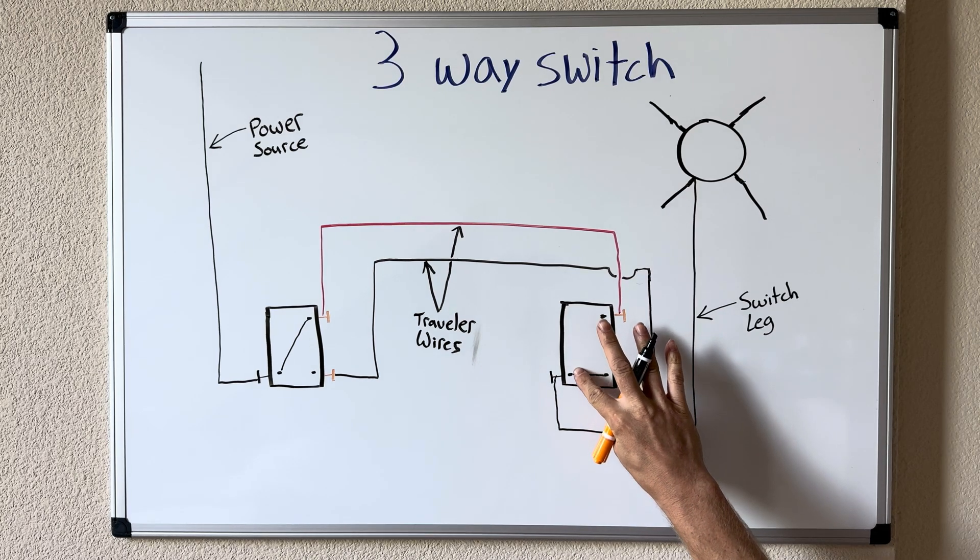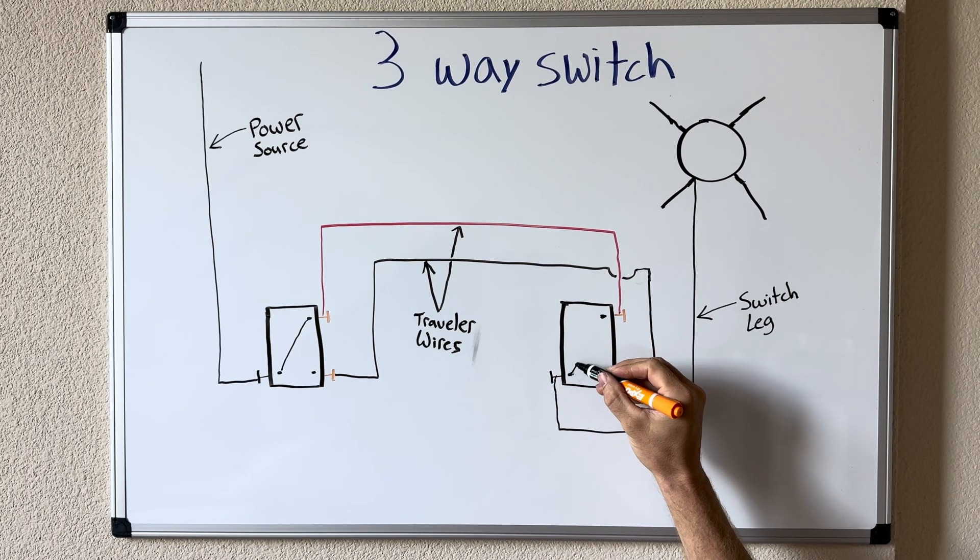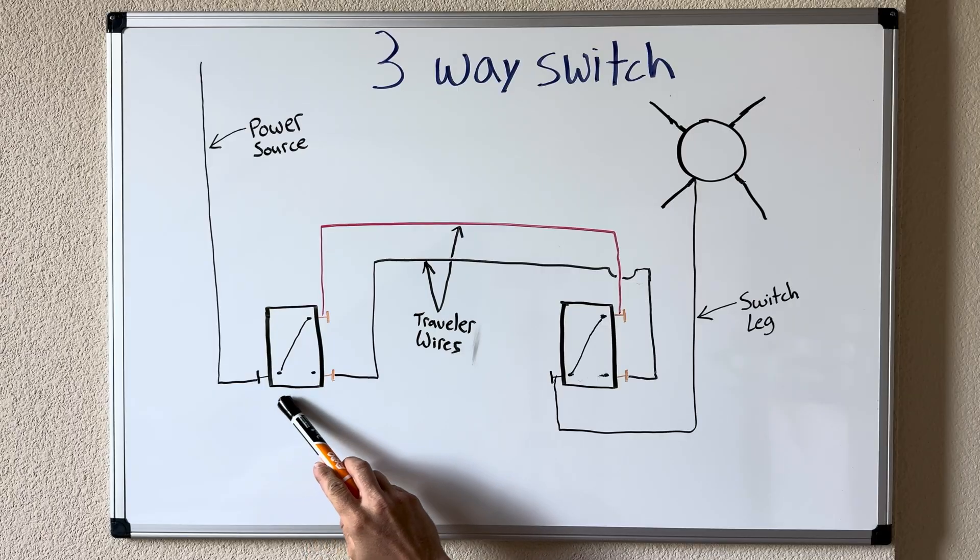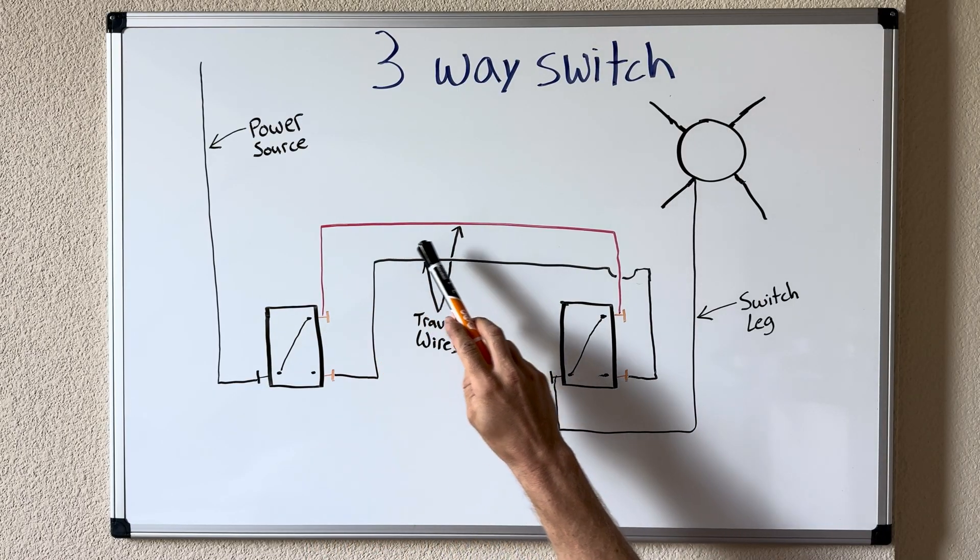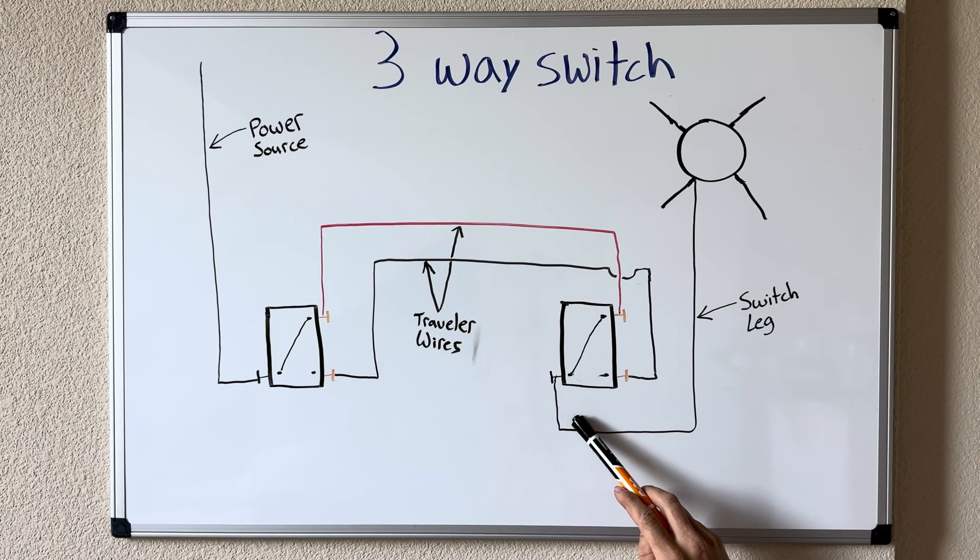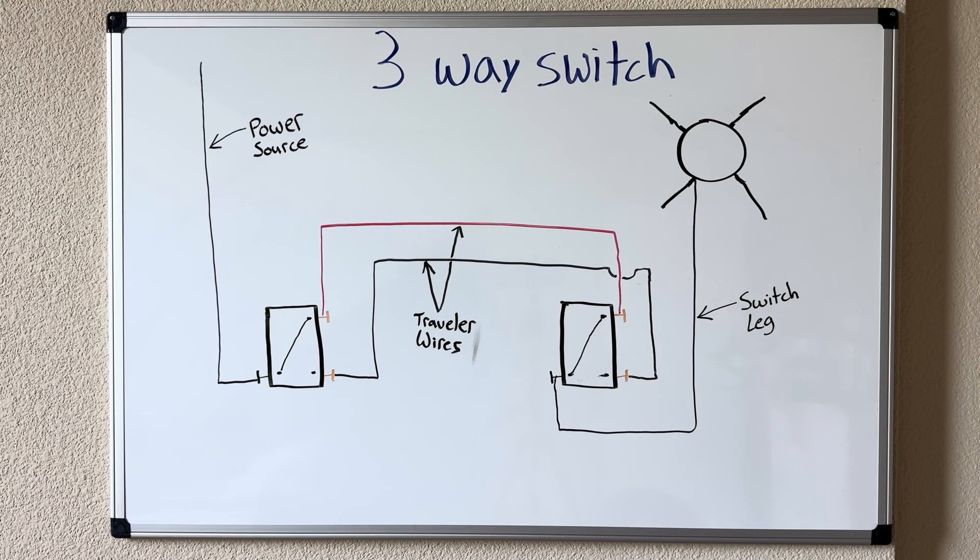So now let's say we're gonna switch this switch position and we are in fact going to engage with the red traveler wire. What we've done now is allowed power to travel all the way through up into our red traveler wire through to our next switch down to our black common screw to our switch leg all the way up to our light providing us with power to our light.